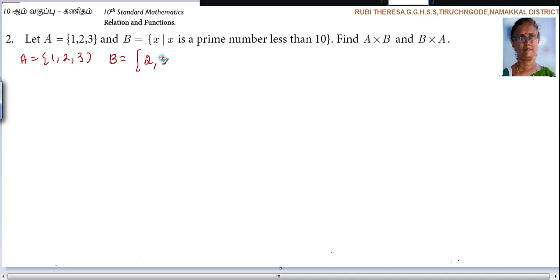Other than 2, all other even numbers are composite numbers. Only 2 is the even prime number. Then 3 is the prime number because it has only two factors. Then 4 is even so you should not write. Then 5 is the prime number. Then 6 is even you should not write. Then 7 is the prime number because it has only two factors.